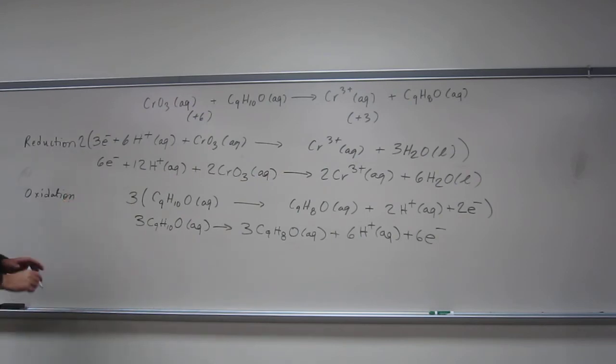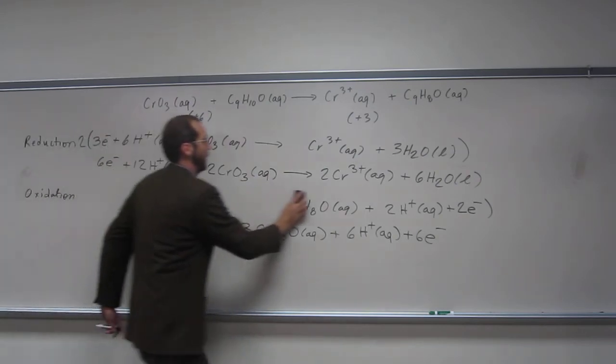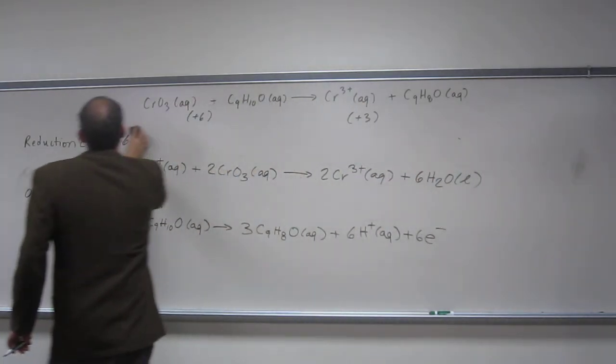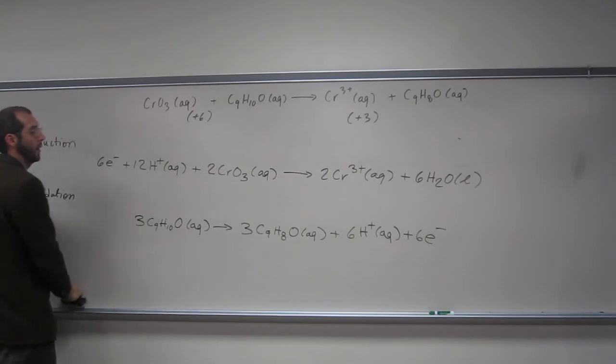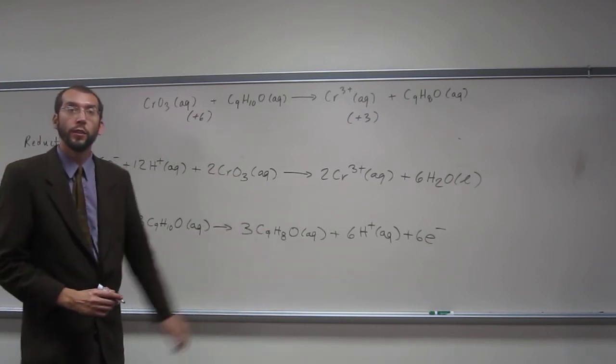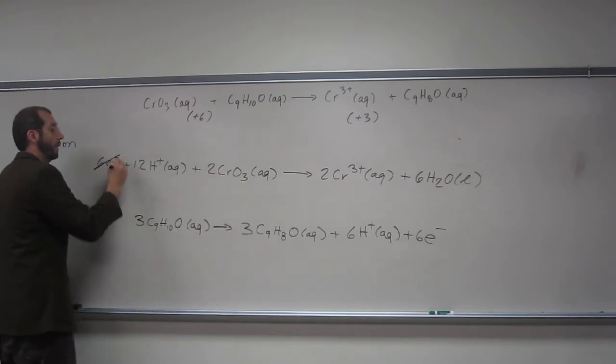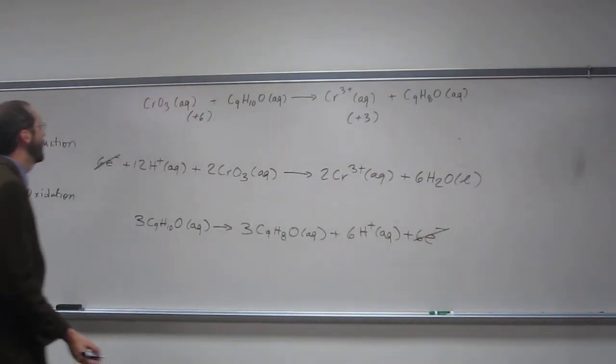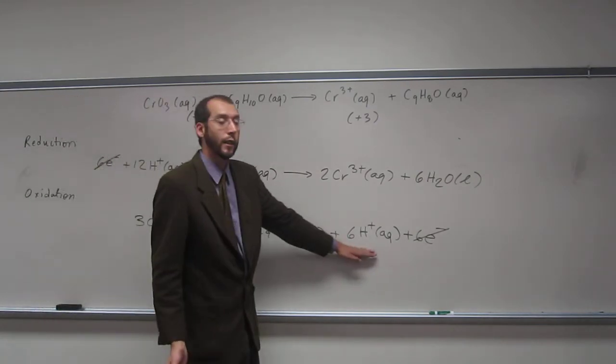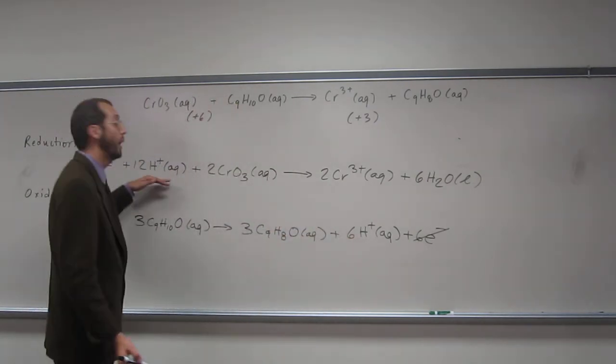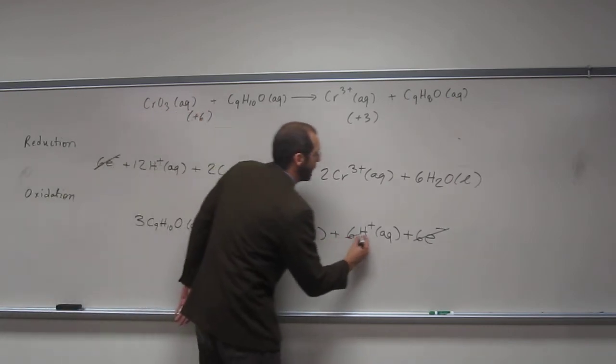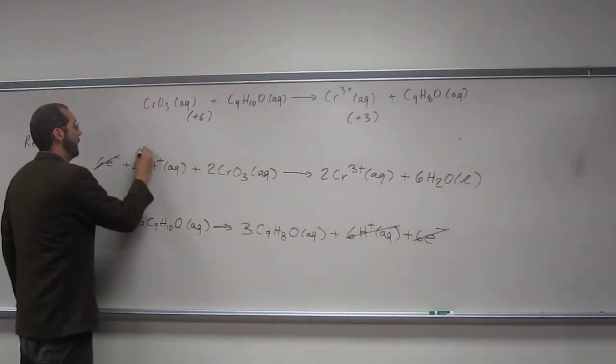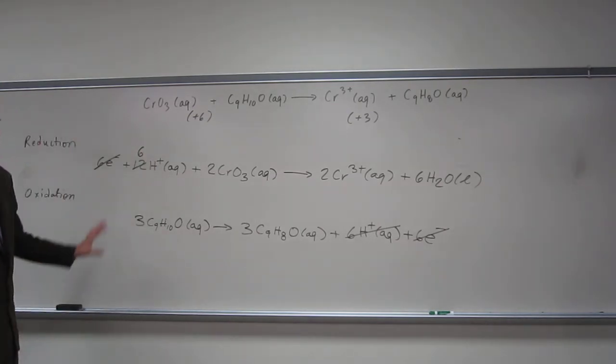Now what we do to write the overall reaction is cancel out things that are on both sides. We've got six electrons on both sides, which we cancel. But we've also got six H+ here and 12 H+ here. So we cancel out that six H+ and make that a six.